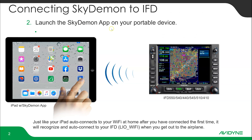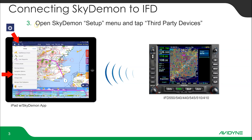The next thing we're going to do is launch the SkyDemon app — I'm assuming you've already got it loaded and everything's good. Once you've opened the SkyDemon app, go under Setup, which is the little gear icon, and tap on Third-Party Devices.